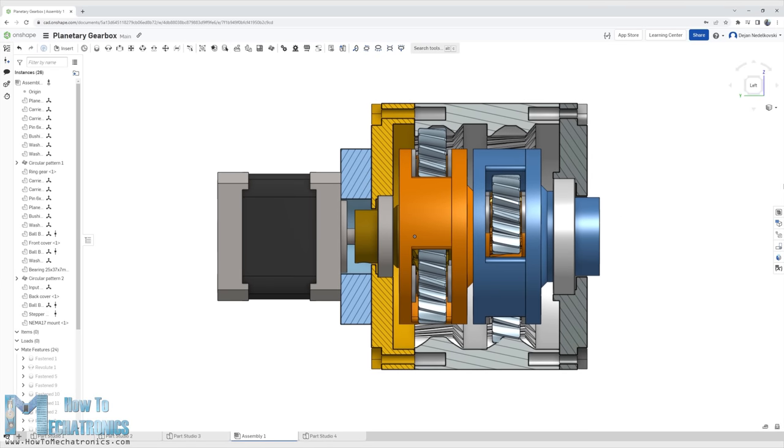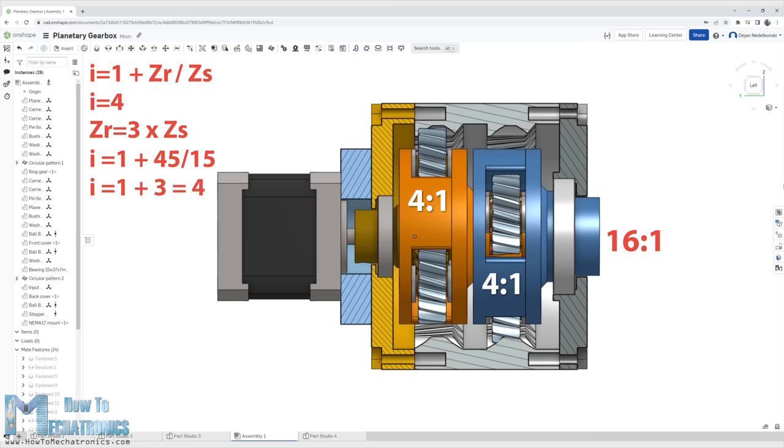In my case, I chose two stages with 4 to 1 ratio and when multiplied, they make 16 to 1 ratio. According to the formula, in order to get 4 to 1 ratio, the ring gear teeth number should be 3 times the sun gear teeth number. I chose 45 teeth for the ring gear and 15 teeth for the sun gear. That's 45 divided by 15 equals 3 plus 1 equals 4 or 4 to 1 ratio.